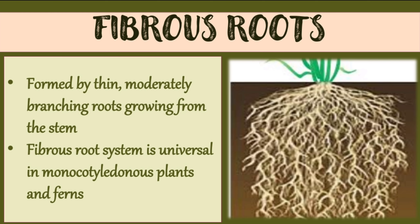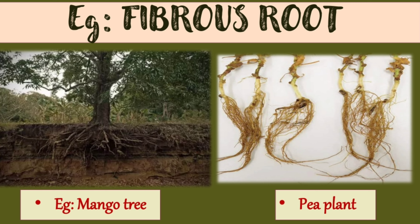Next is fibrous roots. Fibrous roots are usually formed by thin, moderately branching roots growing from the stem. The fibrous root system is common in monocotyledonous plants and ferns. These fibrous roots are seen in mango tree and pea plant.